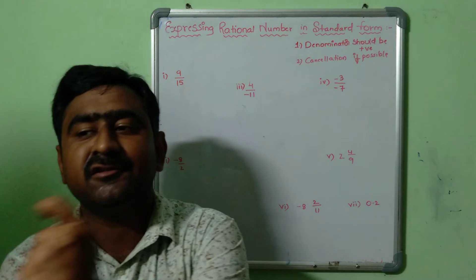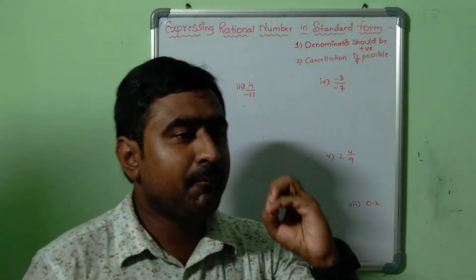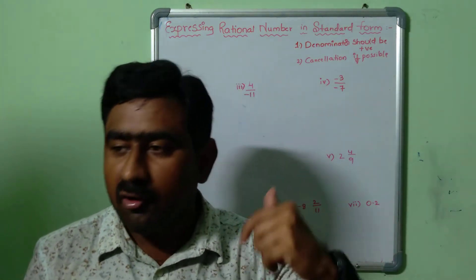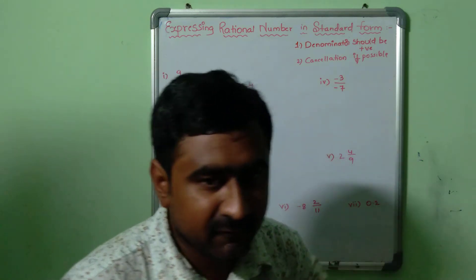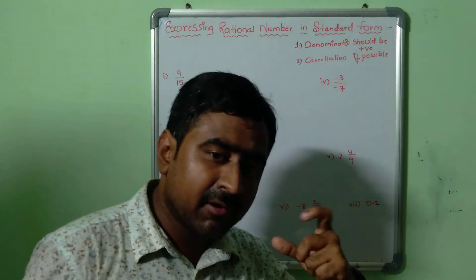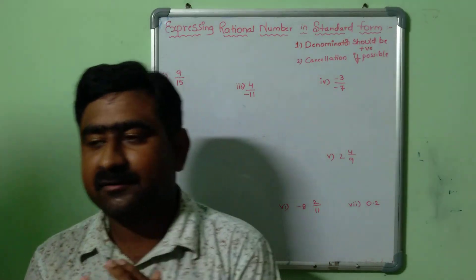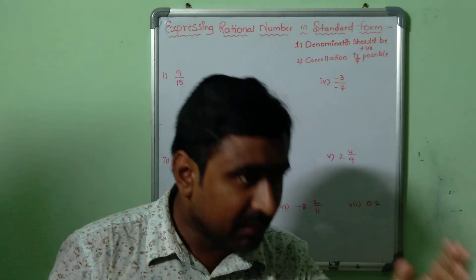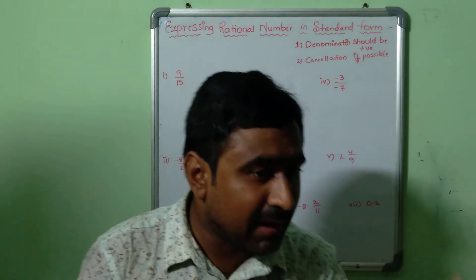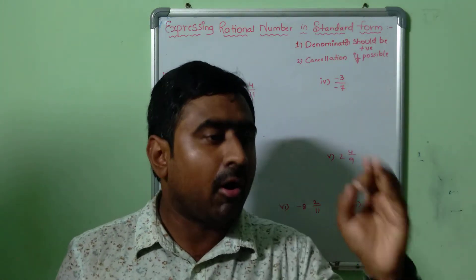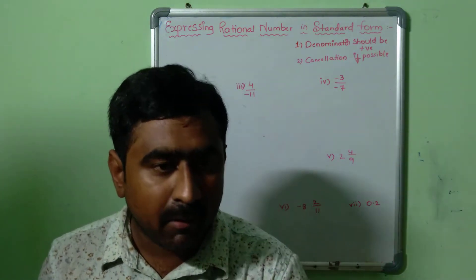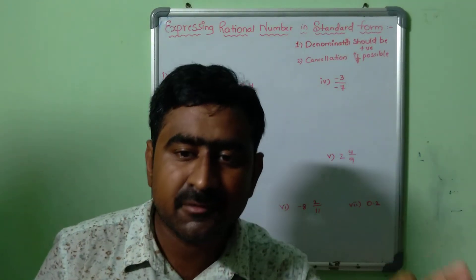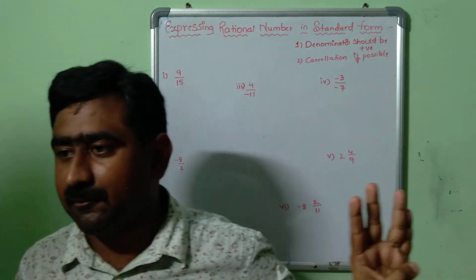For expressing a given rational number in its standard form, there are mainly two important steps to follow. The first important step is: the denominator should always be positive — the denominator should never be negative. Always keep in mind that the denominator part should be positive.